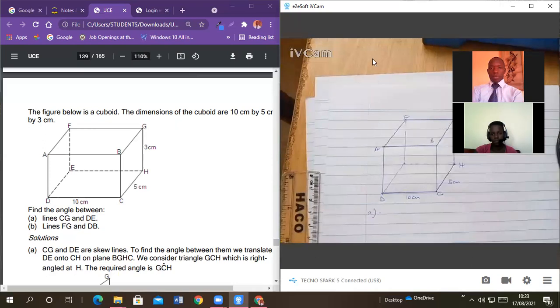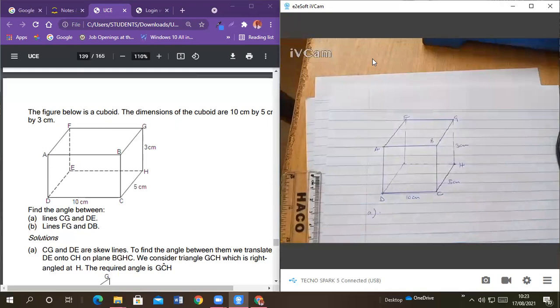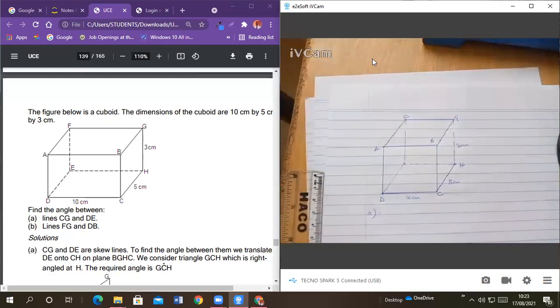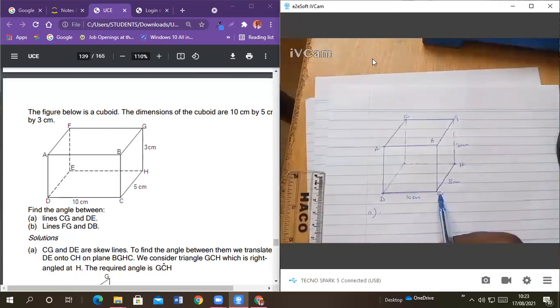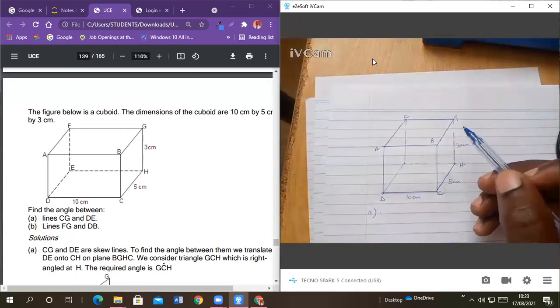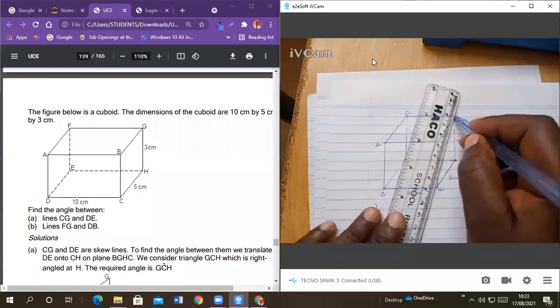Okay, so what are they saying? Find the line, the angle between C, D, C and D.